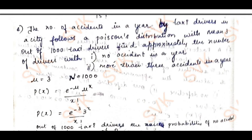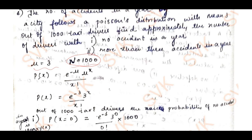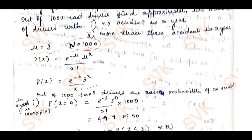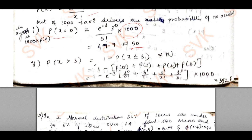For the accident problem, Poisson's distribution is applicable. I need no accident in a year and more than 3 accidents in a year. I identify mean (μ) and N. P(X) = e^(−μ) · μ^x / x!. Substituting μ, I find probability of x = 0 and multiply by N = 1000, getting 50. For P(X > 3) × 1000, I get approximately 352.6.